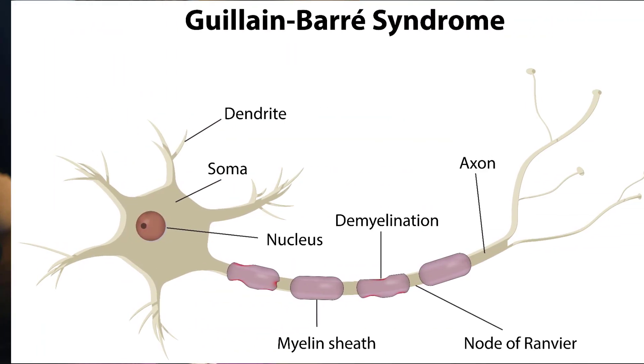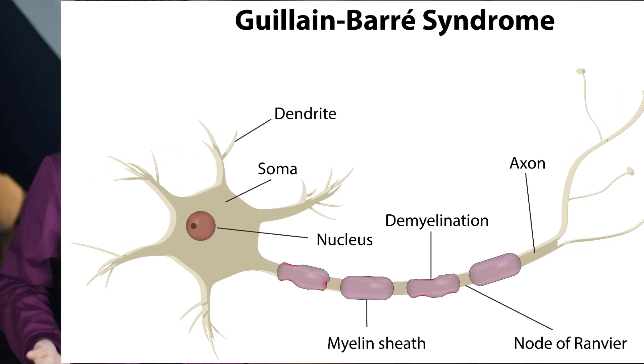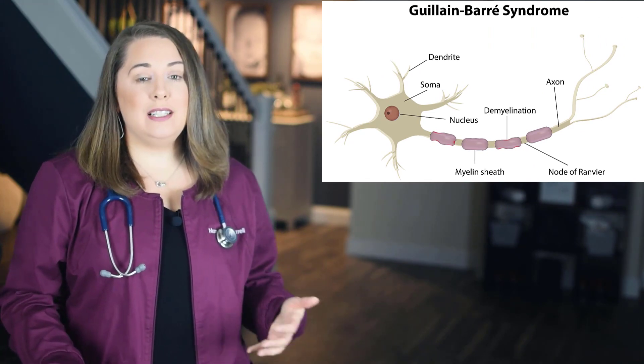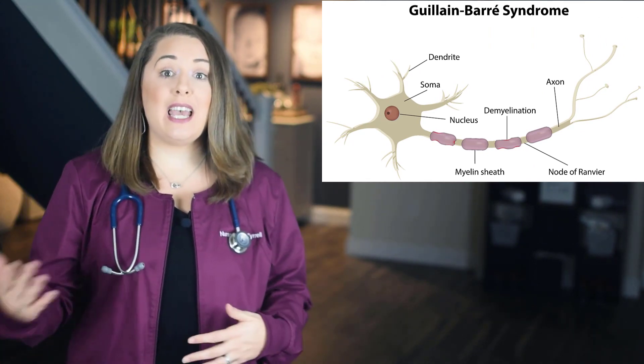Let's start this neuro series off by talking about Guillain-Barré syndrome. This is an acute and progressive autoimmune disease, meaning it's going to come on suddenly and without treatment it's going to continue to get worse very rapidly. Symptoms occur because the body starts attacking and destroying the myelin sheath surrounding these little cables in our body called axons. Axons are responsible for making sure electrical impulses seamlessly travel from neuron to other neurons or to muscles and glands.